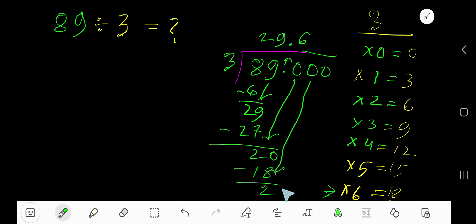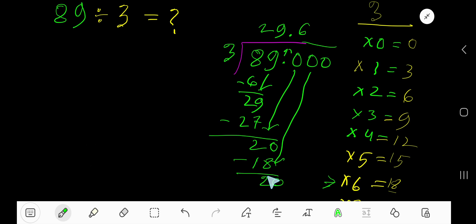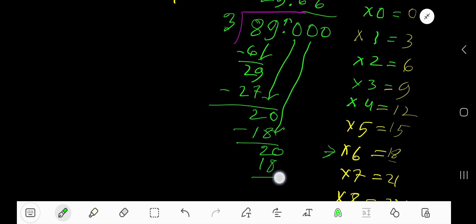Bring down this zero. So we are getting 20 again. So 3 goes into 20 again, 6 times. 6 times 3 is 18. Subtract. 2. Bring down this zero. 20.